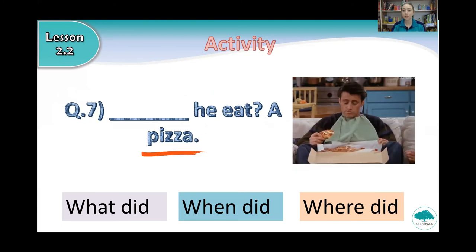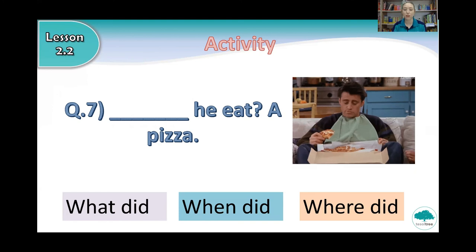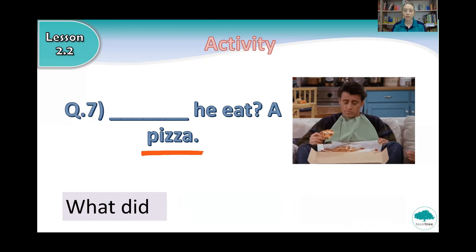Next one: something he ate — a pizza. So a pizza is a thing. Do we use what did, when did, or where did if we talk about a thing? That's right. What did he eat? He ate a pizza. Very good.